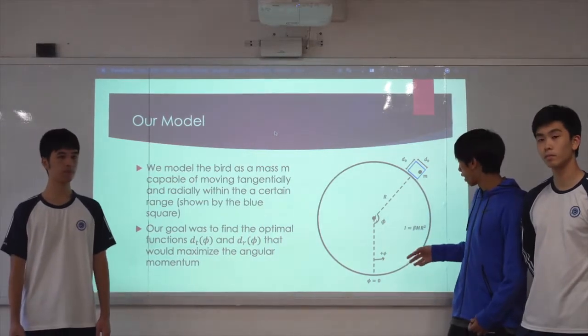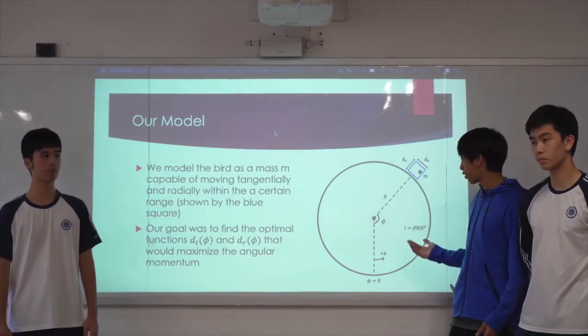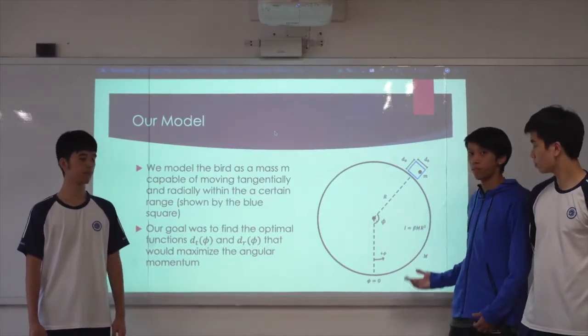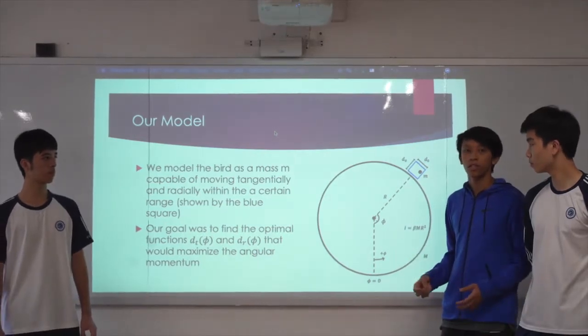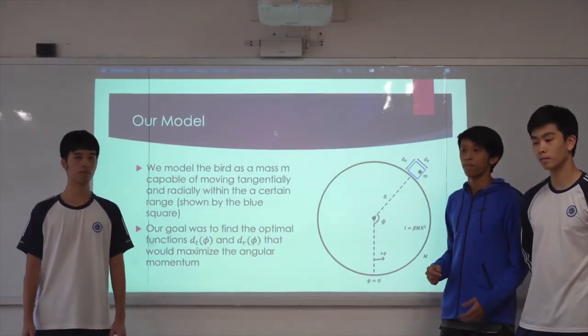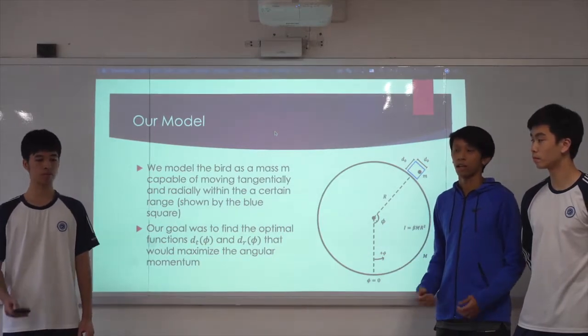Our other constants include r, which is the radius of the wheel, and beta, which is the coefficient for the moment of inertia, as well as big M, which is the mass of the big wheel. Finally, we have b, which is the coefficient for the damping force, which is proportional to b times the angular velocity.